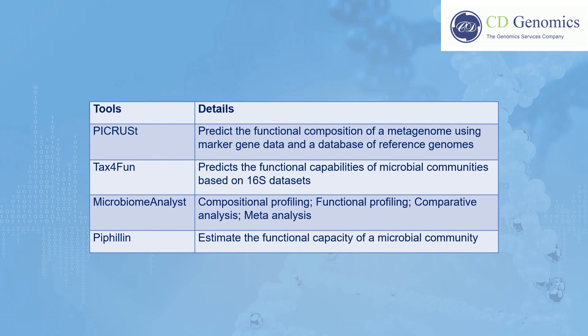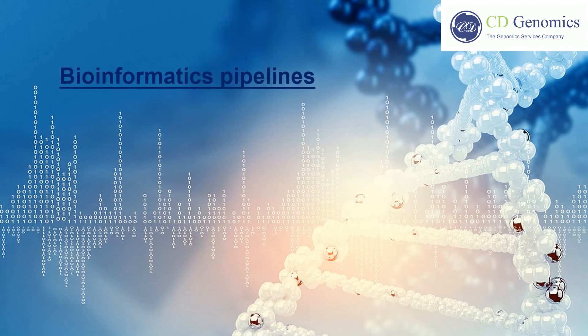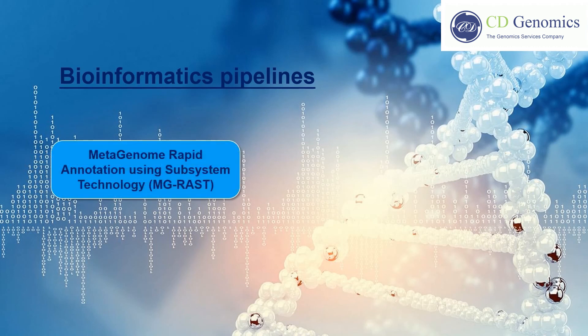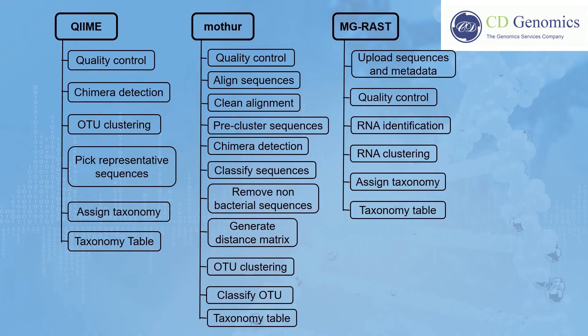There are three bioinformatics pipelines commonly used for 16S rRNA gene analysis: Metagenome Rapid Annotation Using Subsystem Technology (MG-RAST), Quantitative Insights Into Microbial Ecology (QIIME), and MOTHUR. The bioinformatics pipeline for these three tools is shown in this picture. A previous study performed by Plummer et al. showed that the three tools produce comparable results and all of them can be selected to generate a reliable high-level sample composition.